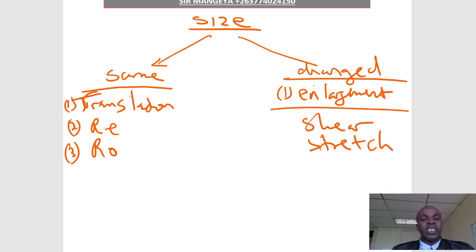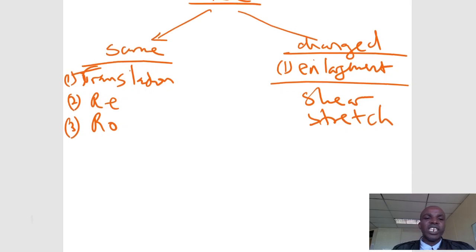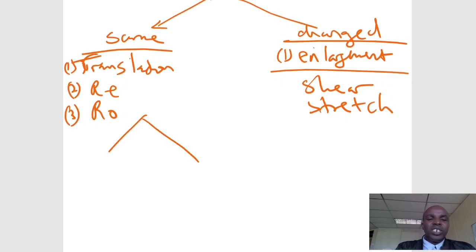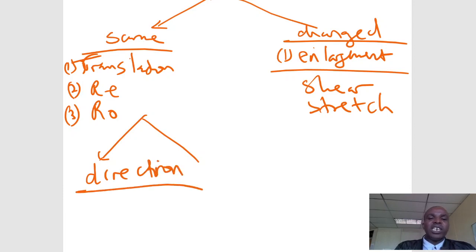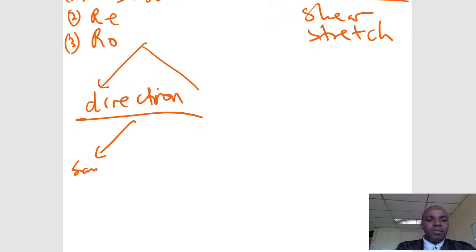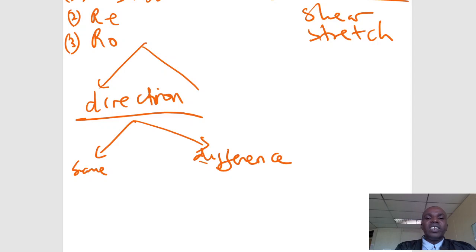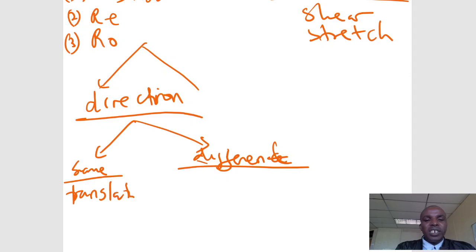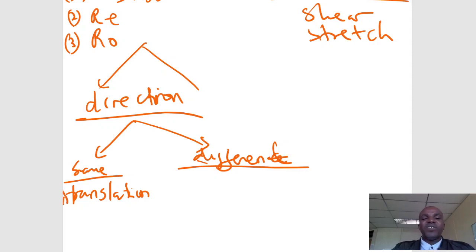If the size is the same, it's translation, reflection, or rotation. To narrow it down further, move on to the second dimension: check direction. If the direction is the same — meaning the image is facing the same direction as the original shape — then it's a translation.